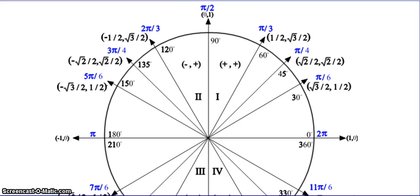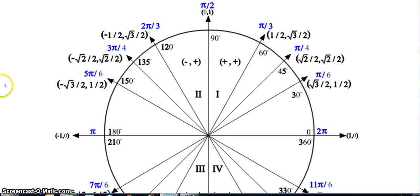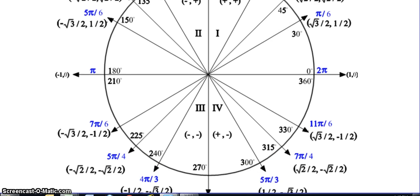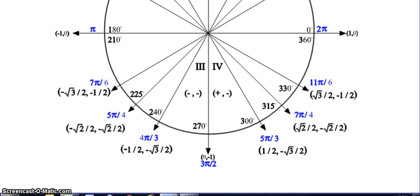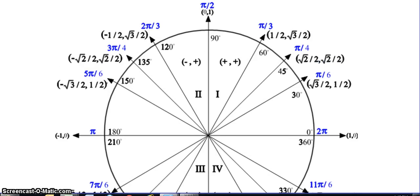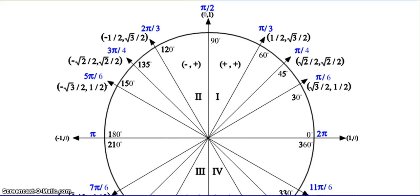Here is our unit circle completely filled out. I'm not going to spend a ton of time going over how we get these angles and these values — I did that at the beginning of the year. If you want to refresh your memory, you can go back and watch that video or look back in your notes. If you have questions, I can answer those in class. Remember, it basically just relates to our 30-60-90 triangle and our 45-45-90 triangle, and understanding the fact that the radius is 1.